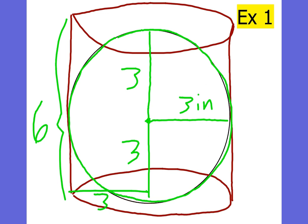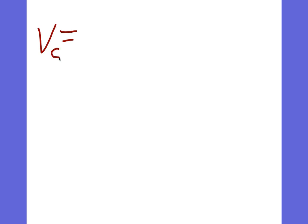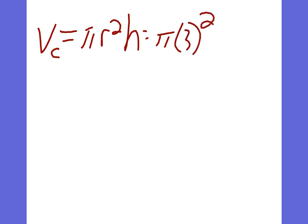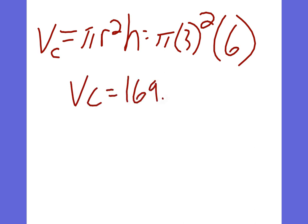We'll do the volume of the cylinder first. The volume of the cylinder — V sub C — equals pi r squared h, so pi times 3 squared times the height, which is 6. We'll round it to 169.65. The unit is cubic inches, but we won't write the unit until the end.